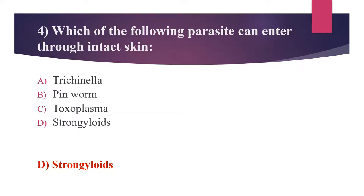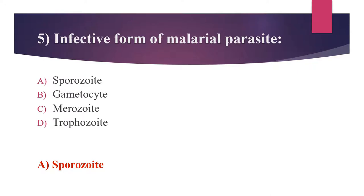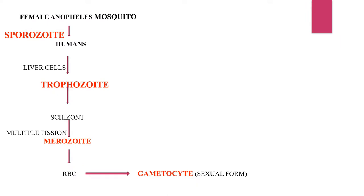The fifth question: What is the infective form of the malarial parasite? Option A: Sporozoite. Option B: Gametocyte. Option C: Merozoite. Option D: Trophozoite. The answer is Option A, sporozoite. A malaria-infected female Anopheles mosquito inoculates sporozoites into the human. Sporozoites infect liver cells, where they absorb nutrients and become trophozoites, then transform into the dividing form schizont. It undergoes multiple fission to form merozoites. Liver cells rupture and release merozoites, which enter RBCs; several merozoites transform into sexual forms called gametocytes.